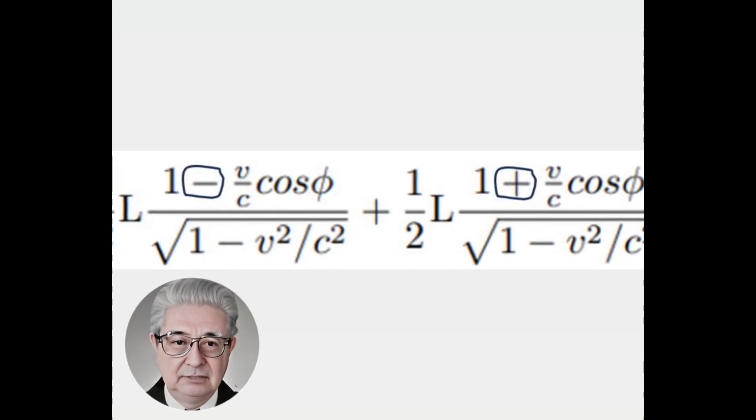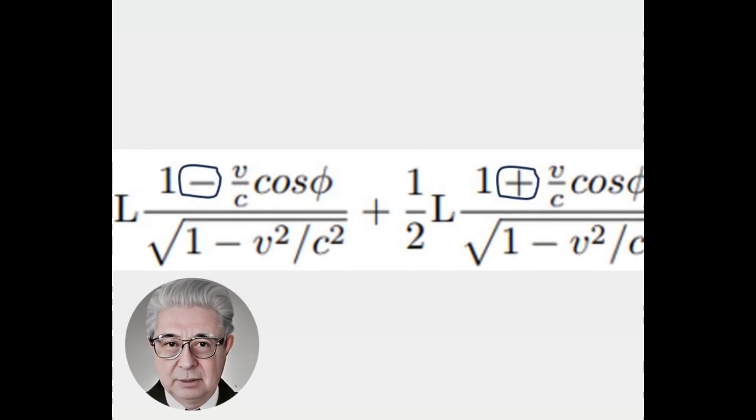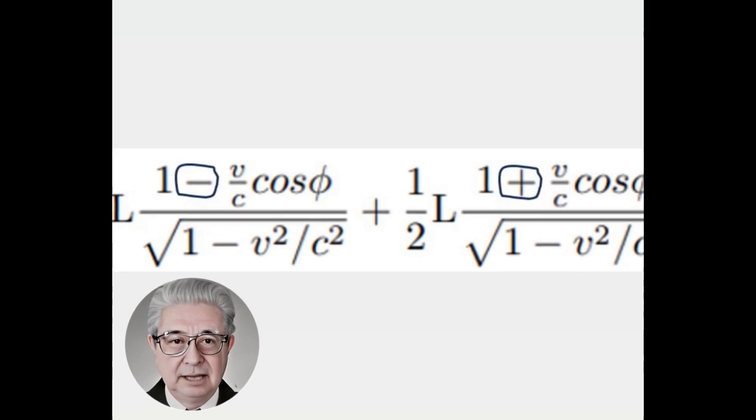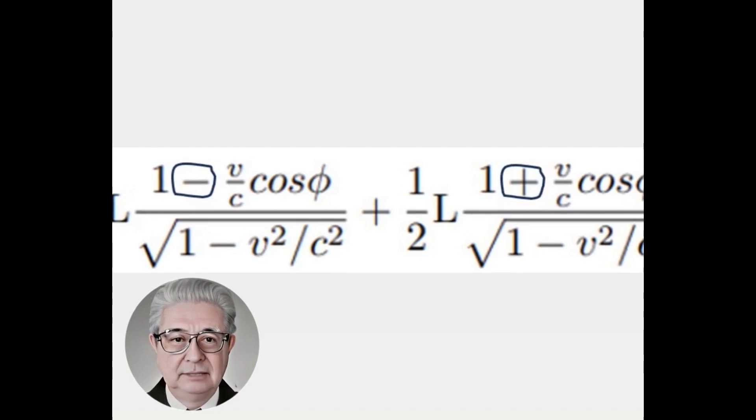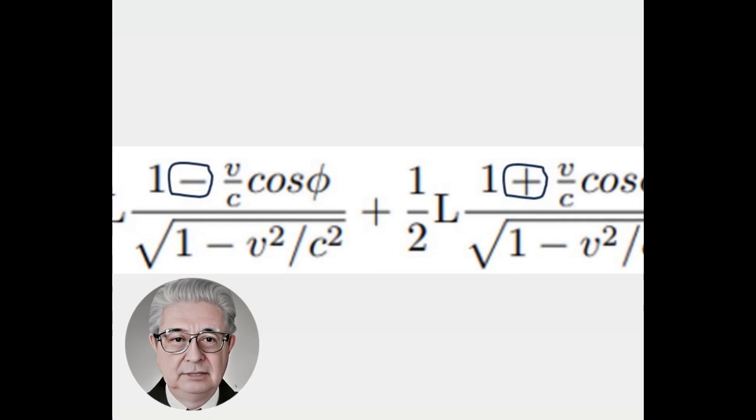I wonder why the terms relative speed between the two systems on the speed of light multiplied by the cosine of the angle phi have opposite signs, negative the first and positive the second?